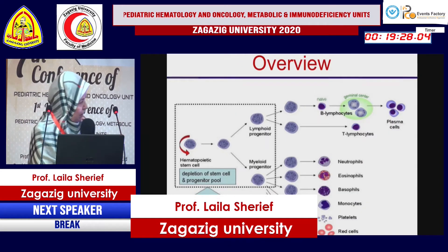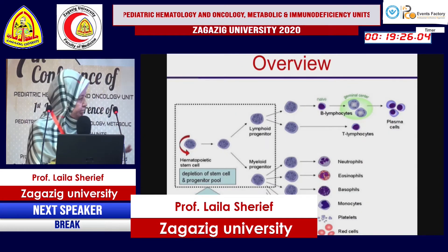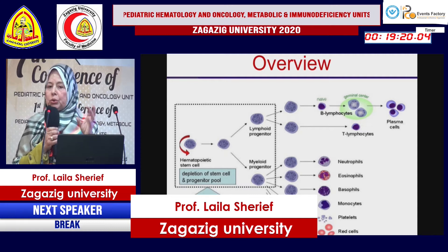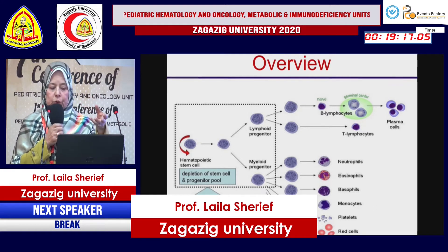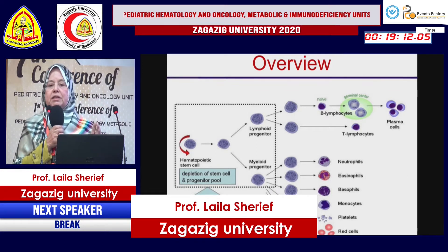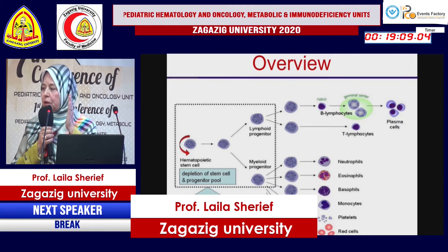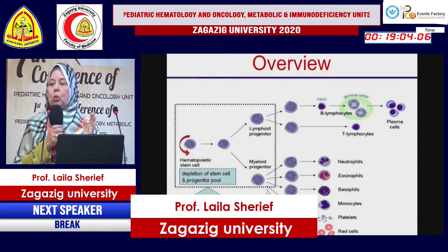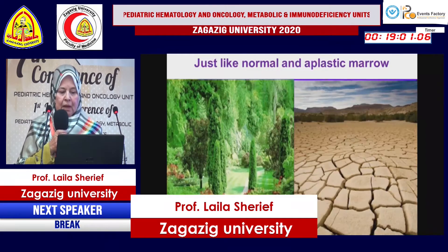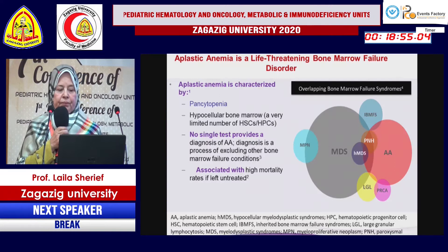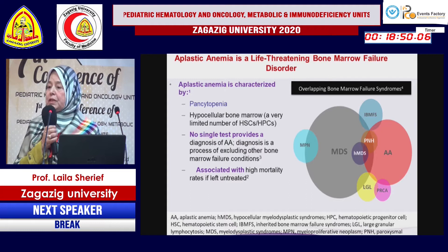As an overview of aplastic anemia, the pluripotent hematopoietic stem cells in the bone marrow have two important criteria: self-renewal and the ability to differentiate into any type of blood element. Any inciting agent affecting these cells will lead to pancytopenia. Aplastic anemia is defined by both pancytopenia and a hypocellular bone marrow.